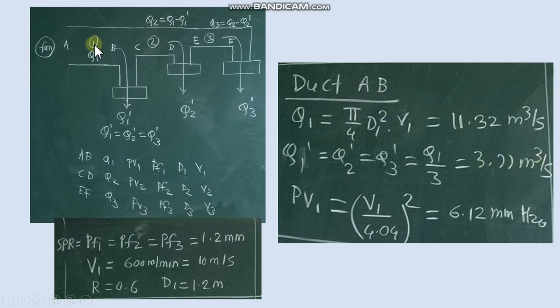Then in the main duct dynamic pressure PV1 we calculate. Now we go for the next duct CD. Where Q2 we can obtain now by subtracting this value from the Q1, 11.32. We get Q2.